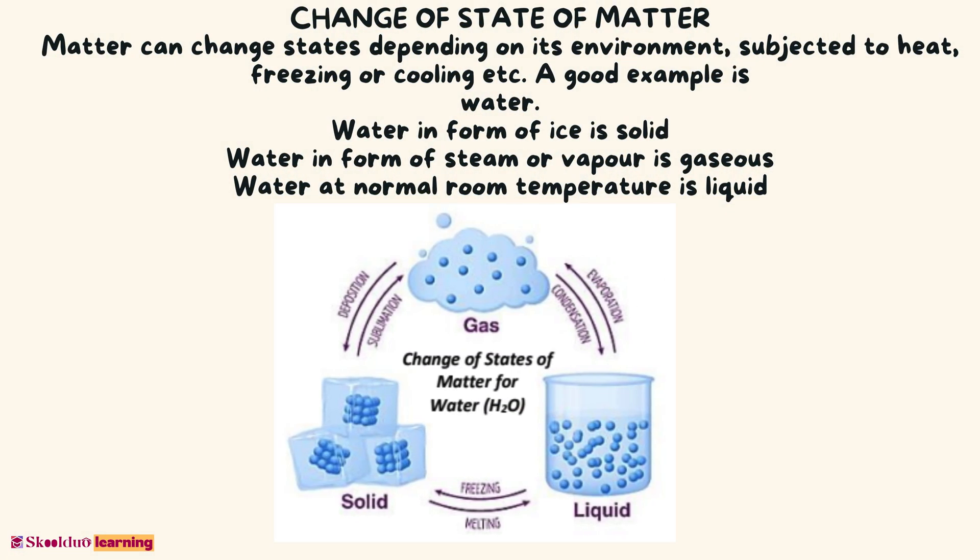Change of state of matter: Matter can change states depending on its environment, whether subjected to heat, freezing, or cooling. A good example is water. Water in the form of ice is solid. Water in the form of steam or vapor is gaseous. Water at normal room temperature is liquid.